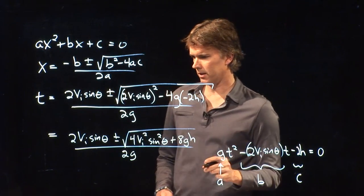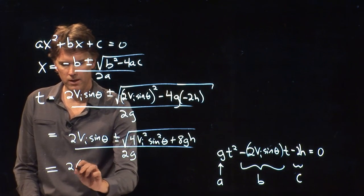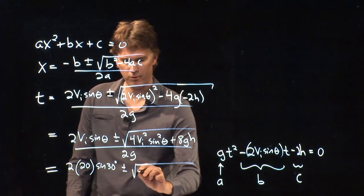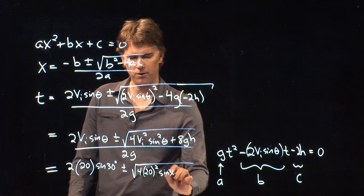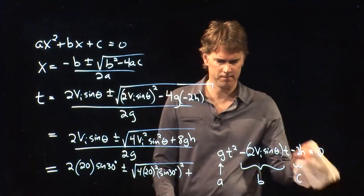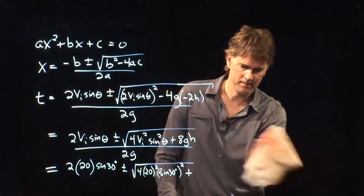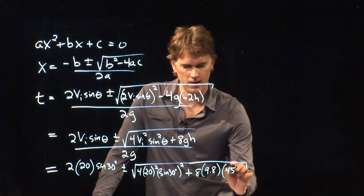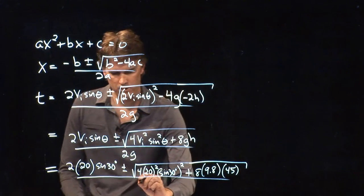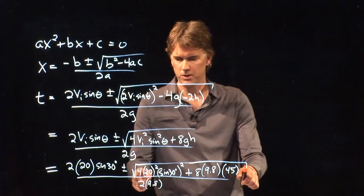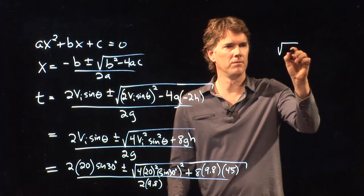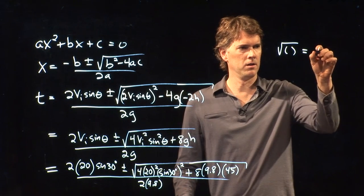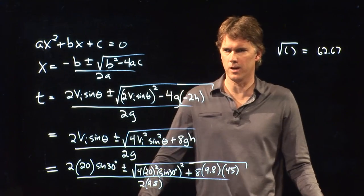So it's 2 times 20 times sine of 30 degrees plus or minus the square root of 4 times 20 squared sine of 30 degrees squared plus 8 times 9.8 times 45. And then all of this over 2 times 9.8. So why doesn't somebody do the square root part first and tell me what you get for the square root? It's 62.67. The square root is 62.67? Anybody else concur on that one? You concur? Excellent.